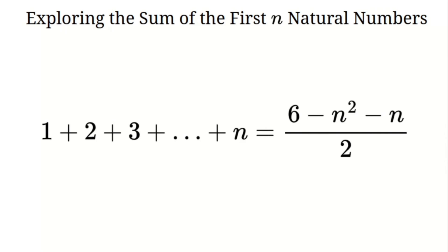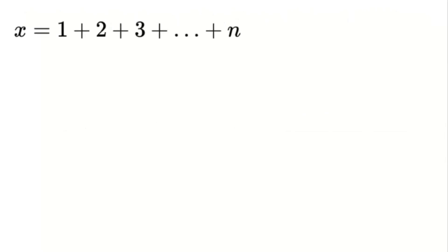Let's start with the sum of the first n natural numbers: x equals 1 plus 2 plus 3, and so on up to n. This is the sum we're trying to find. The standard formula for this sum is x equals n times (n plus 1), all divided by 2. But today, we're going to derive this formula using a different method. Let's proceed step by step.